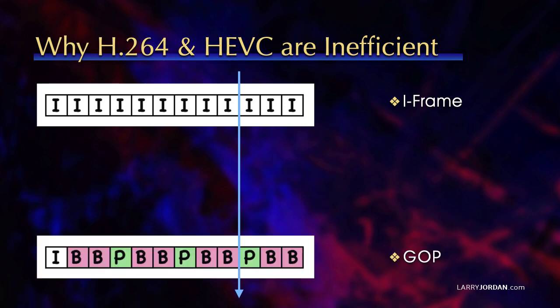So instead, we created what's called a GOP, a group of pictures. We took a clump of pictures. In my example, I'm using 12, and they'll range from 7 to 12 to 15, depending upon a variety of technical factors. But for this illustration, we'll work with 12.